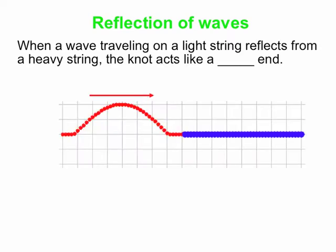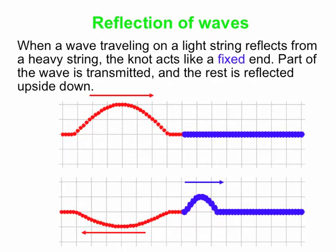We'll take the analogy a bit further with waves on strings. We tie a light string (red) to a heavy string (blue) and send a pulse along. When the pulse gets to the knot, the knot acts like a fixed end. It's hard for the light string to get the heavy string to move, so it's closer to a fixed end. Part of the wave is transmitted into the heavier medium, and importantly, the part that comes back is inverted — upside down — because it reflects as if off a fixed end.